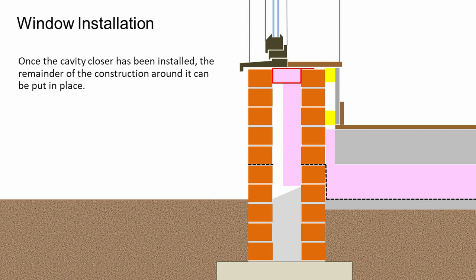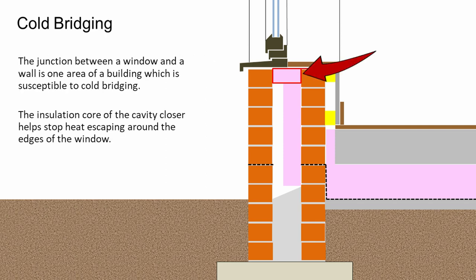Once the cavity closer has been installed, we can put the remainder of the construction in place — the window, the sole board inside — and seal the whole thing up. One of the benefits of cavity closers around windows is that they restrict cold bridging. The junction between a window and a wall is one area of a building particularly susceptible to cold bridging. The insulation core of the cavity closer helps stop heat escaping around the edges of the window.